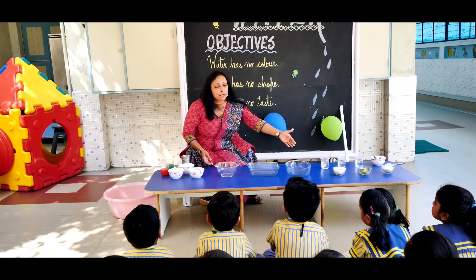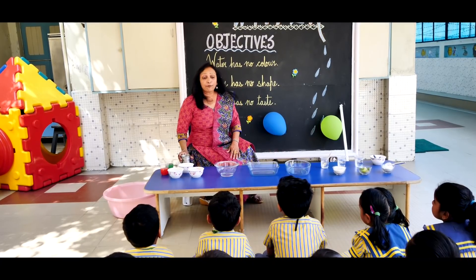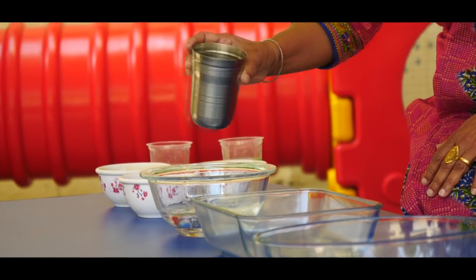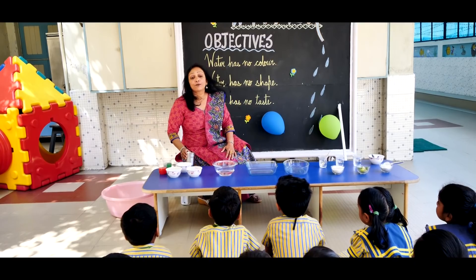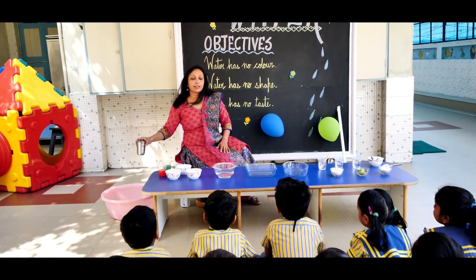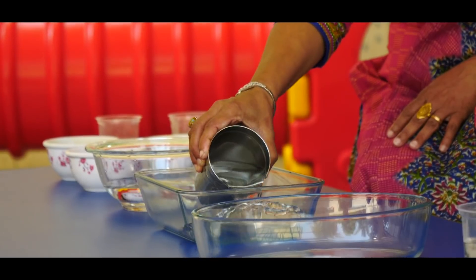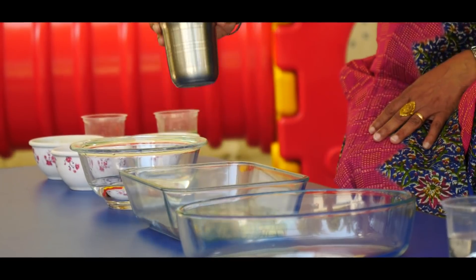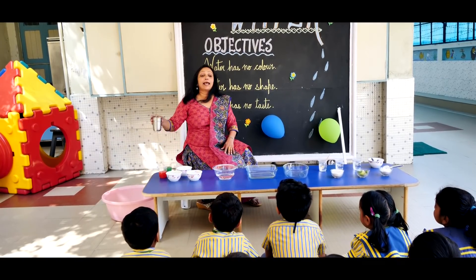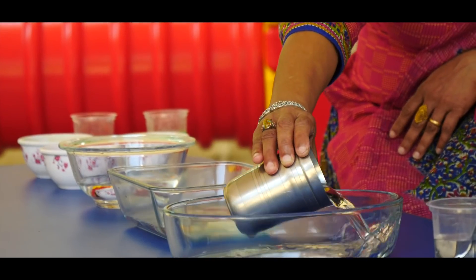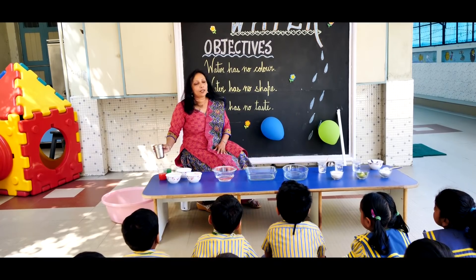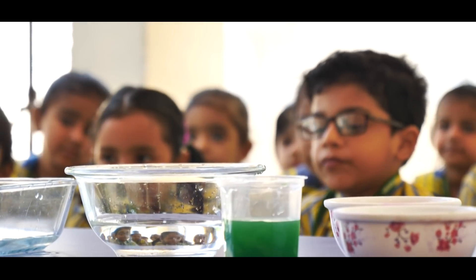Here I have different shapes of containers. If I put a glass of water in a circle shape container, the water will form into a circle shape. Similarly, if I add a glass of water in an oval shape, the water will form in its oval shape. So, water has no shape.